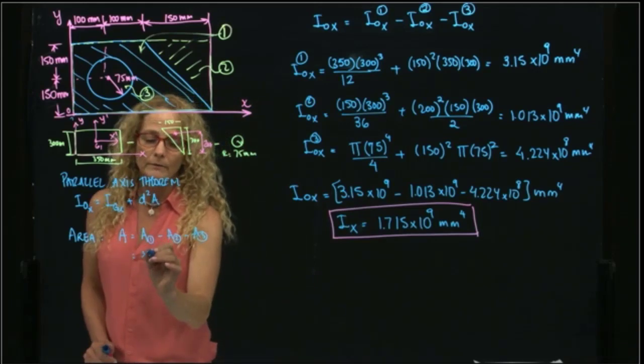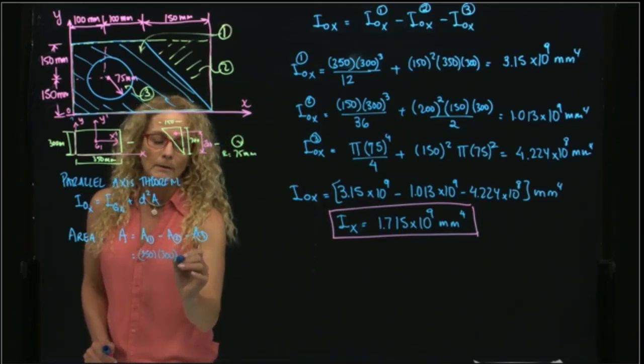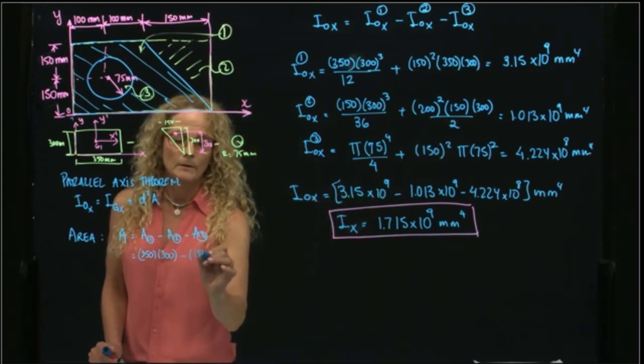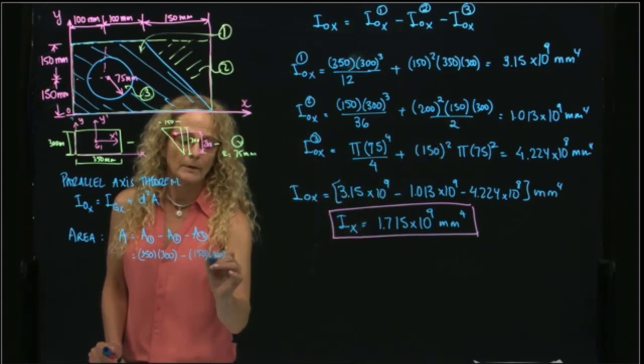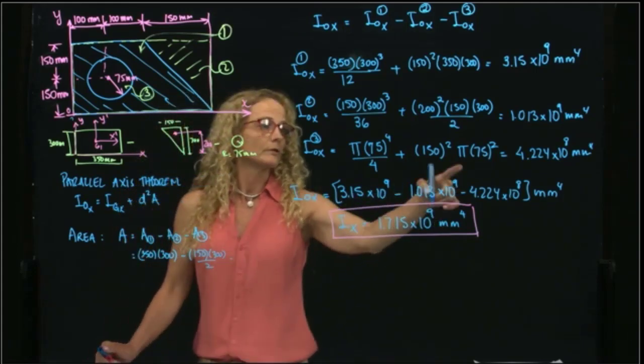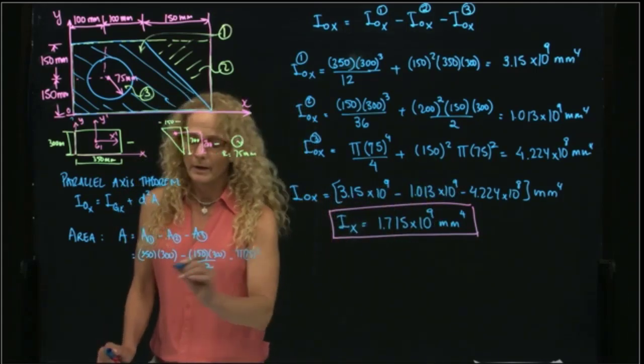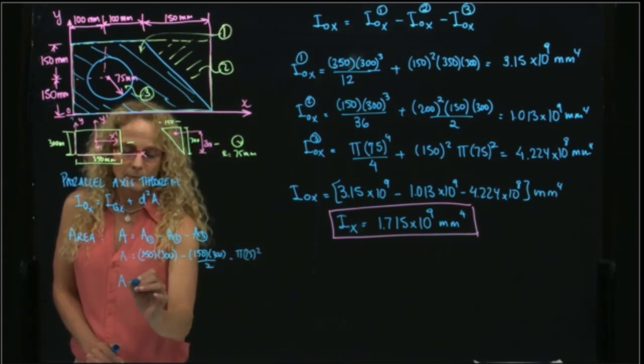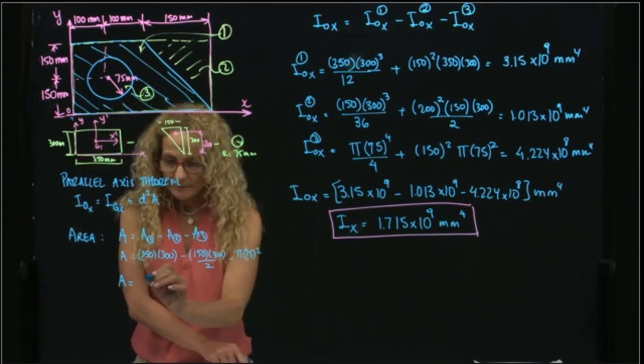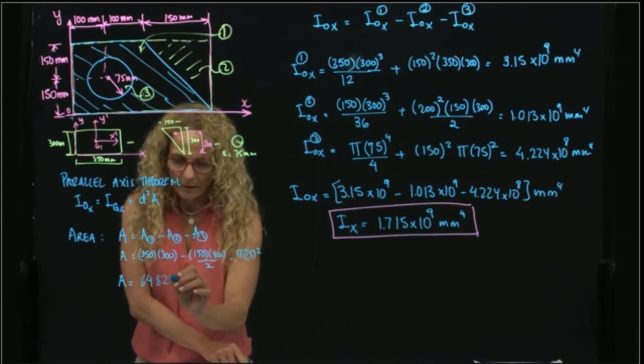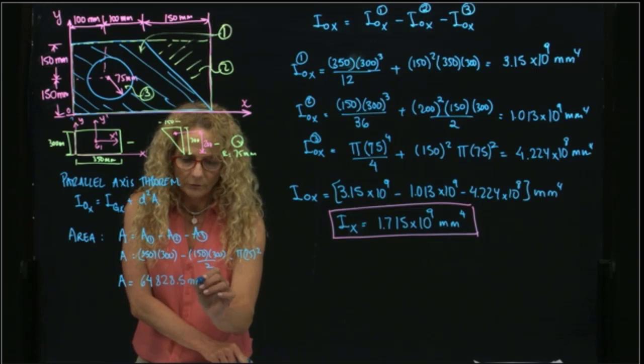So that will be the first figure will be 350 times 300 minus the second figure, which is 150 times 300 divided by 2 minus the third one, which is pi times 75 squared. And the area gives me a value of 64,828.5 millimeters squared.